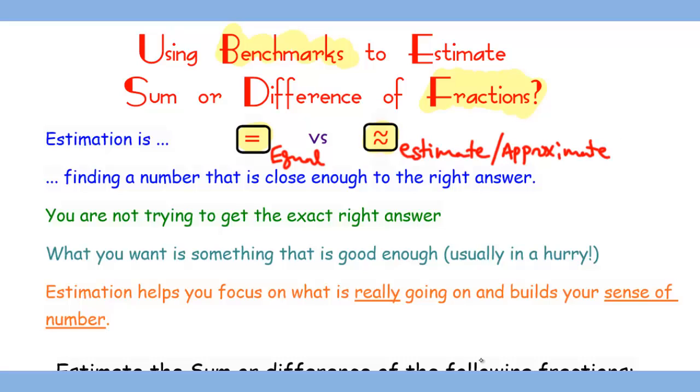Estimation means finding a number that's close enough to the right answer. It does not have to be the exact answer. It's something you do in a hurry, which means you do not need a calculator and should do it mentally. Estimation helps you focus on what's really going on and builds your number sense.